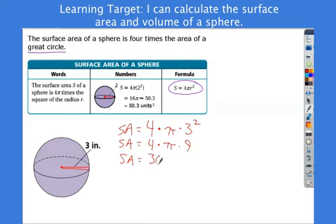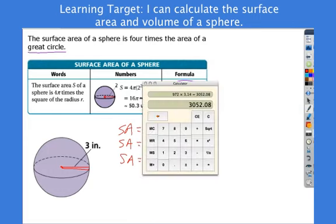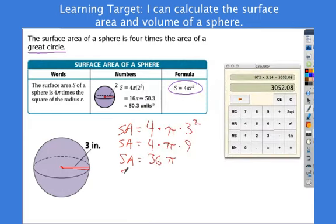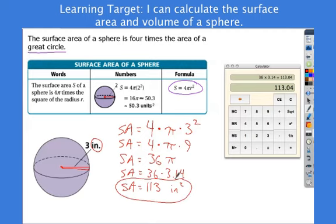So if I get my answer in terms of pi, I have 36π. And I'll take 36 times 3.14. And I get 113.04, or just 113. And my units, once again, these are inches. So remember, surface area is inches squared, not inches cubed. That's it.